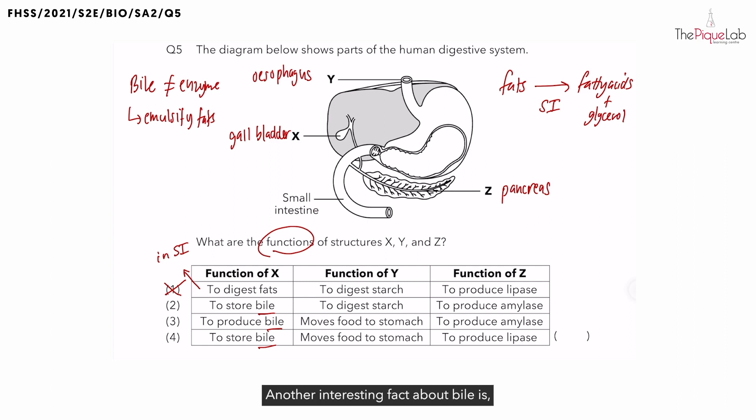Another interesting fact about bile is there are three different organs that bile is associated with. It is produced by the liver. It is stored in the gallbladder. And finally, it is released into the small intestines. Where bile will finally do its job. And can you remember what is bile's job?